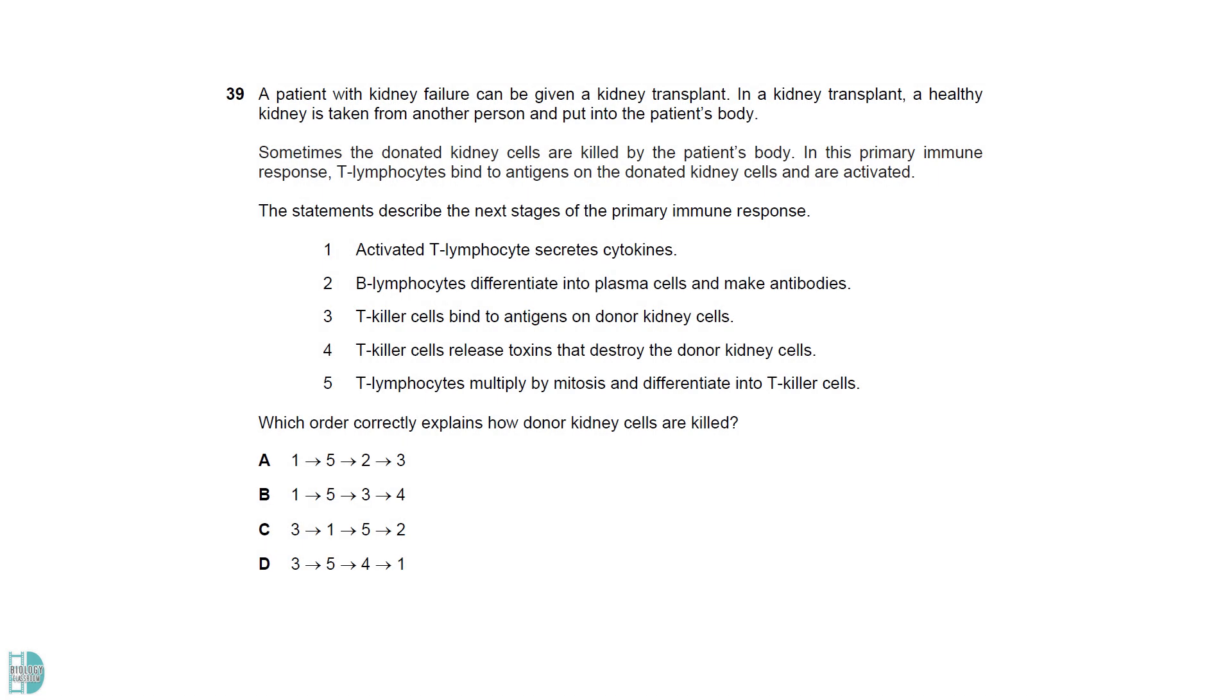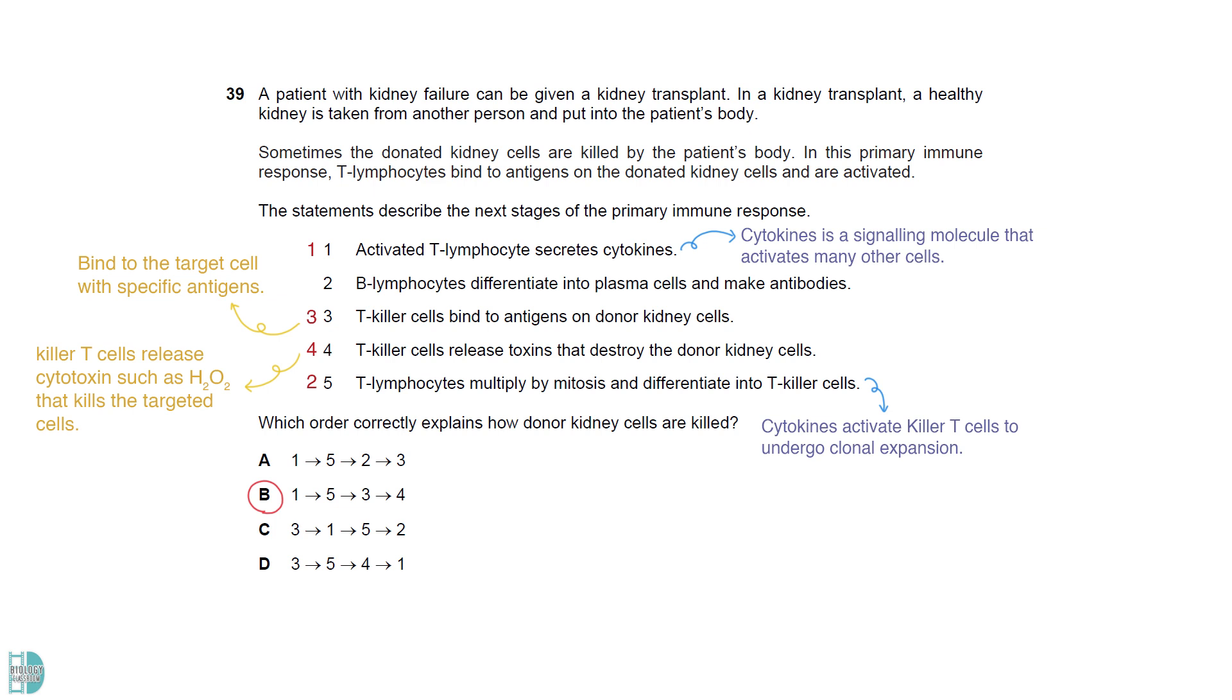Helper T lymphocytes must secrete cytokines first as this is a cell signaling molecule that activates many other cells. Cytokines will activate killer T cells to undergo clonal expansion. They will bind to the target cell with specific antigens. Then killer T cells release cytotoxin such as H2O2 that kills the targeted cells. 2 is irrelevant as the question is about the destruction of transplanted tissue with non-self antigens. This is the role of killer T cells.